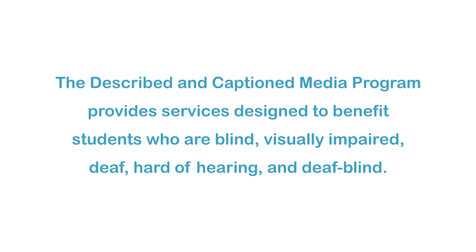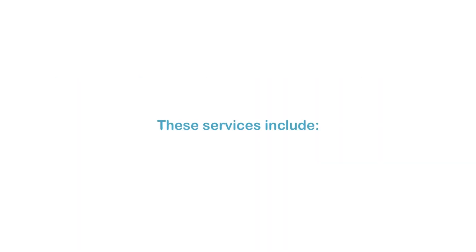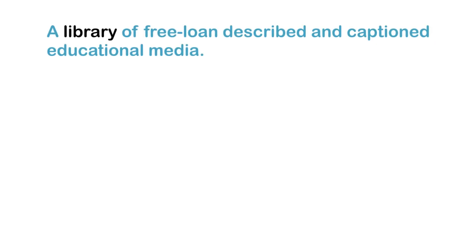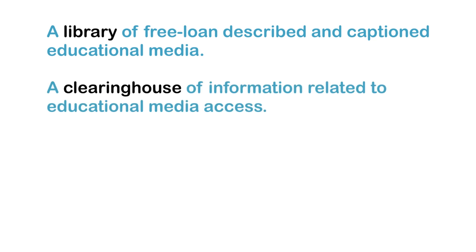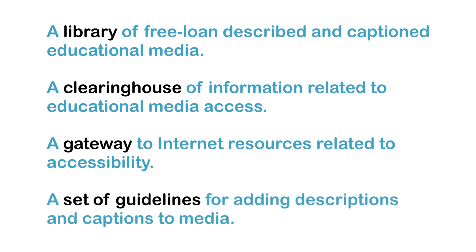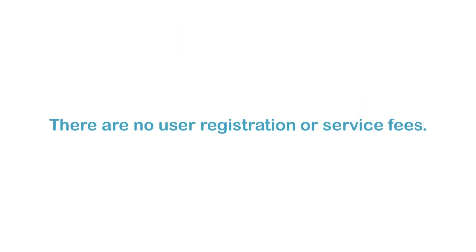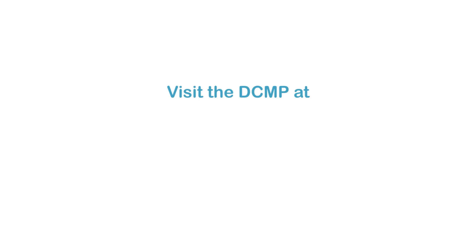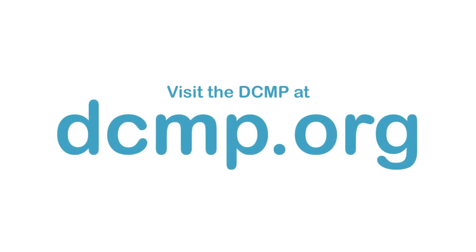The Described and Captioned Media Program provides services designed to benefit students who are blind, visually impaired, deaf, hard of hearing, and deafblind. These services include a library of free loan described and captioned educational media, a clearinghouse of information related to educational media access, a gateway to Internet resources related to accessibility, and a set of guidelines for adding descriptions and captions to media. There are no user registration or service fees. Visit the DCMP at DCMP.org.